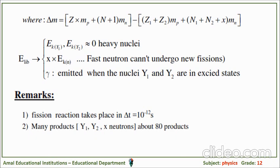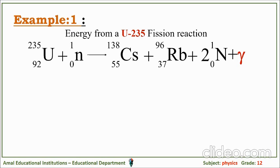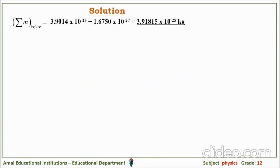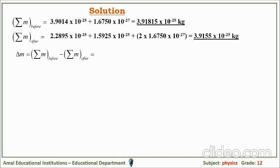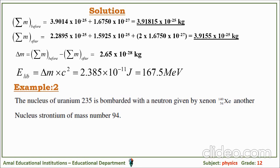There are about 80 possible daughter nucleus products, not required to be memorized. Example: in the uranium-235 fission reaction, uranium captures a neutron and transforms into cesium and rubidium plus two neutrons with gamma radiation. Using the atomic masses in kilograms, we calculate the mass defect, multiply by c² where c = 3×10⁸ m/s, and obtain an energy of 2.38×10⁻¹¹ joules, which is about 167.5 megaelectron volts.